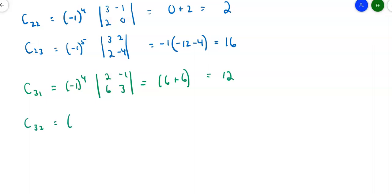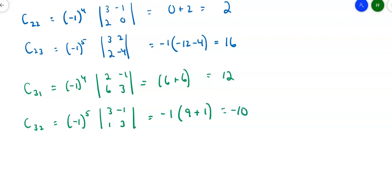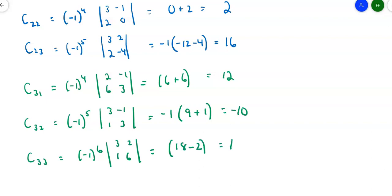C₃₂: (-1)^(3+2) = (-1)⁵, so this one has the opposite sign. Knocking out row 3, column 2, I'm left with [3, -1; 1, 3]. That gives me (-1) times (9 minus (-1)) = (-1)(10) = -10. So C₃₂ = -10. C₃₃: (-1)^(3+3) = (-1)⁶ = 1. Knocking out row 3, column 3, I get [3, 2; 1, 6]. Same sign: 3×6 - 2 = 18 - 2 = 16. So C₃₃ = 16.